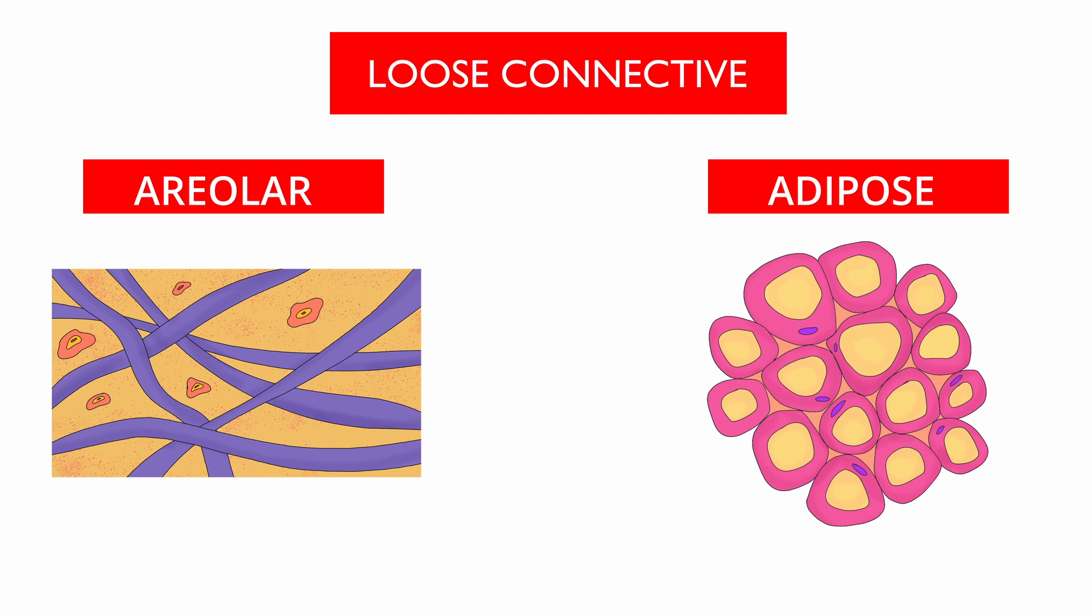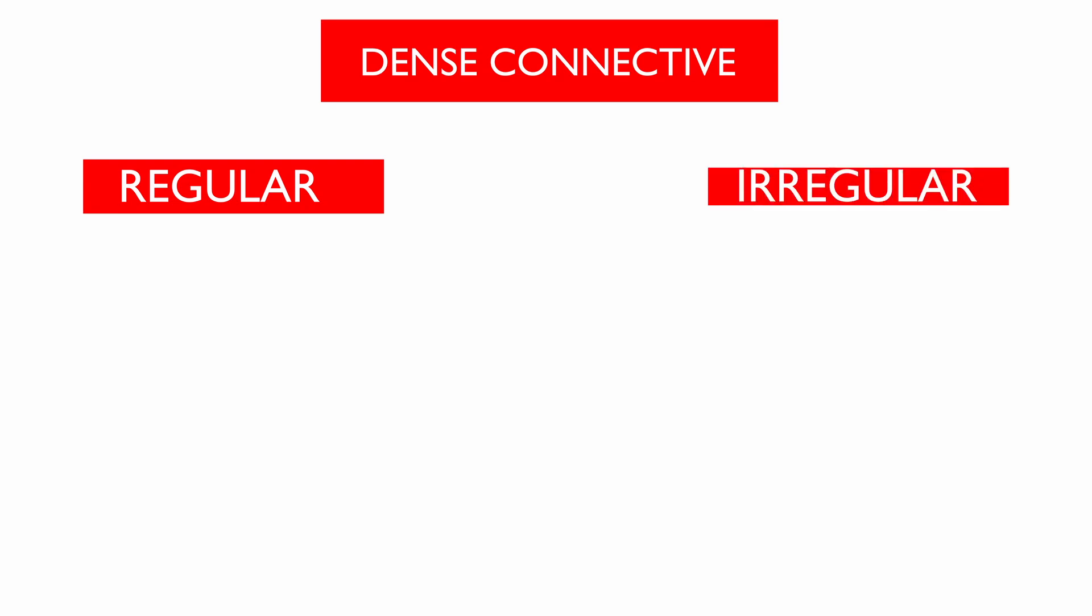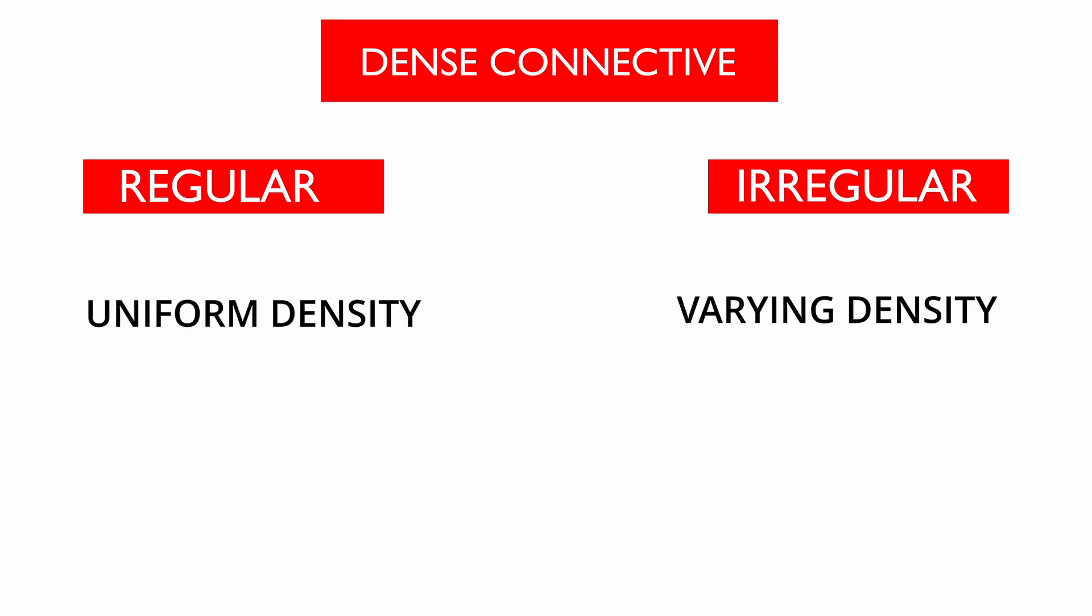Under dense connective tissue, we have dense regular and dense irregular. As implied by their names, dense regular tissue has uniform density, while dense irregular has varying density.